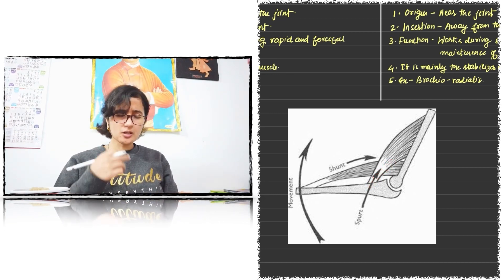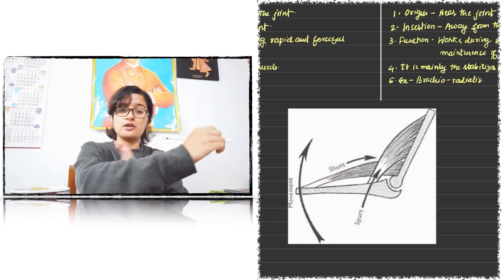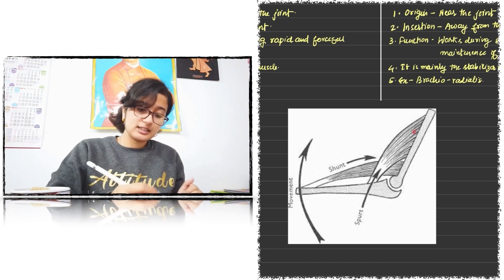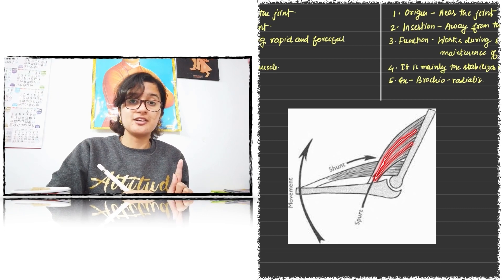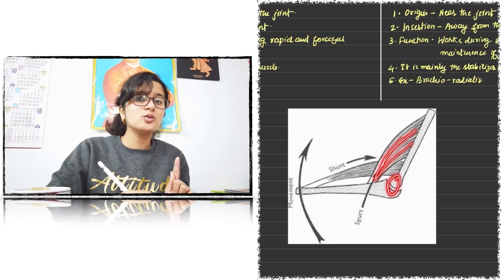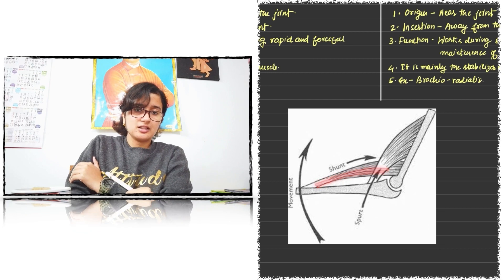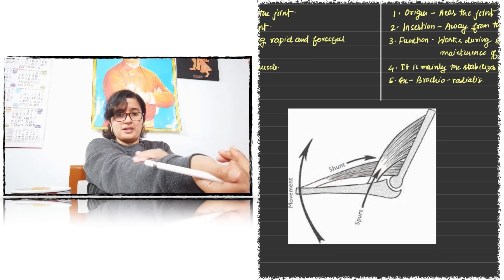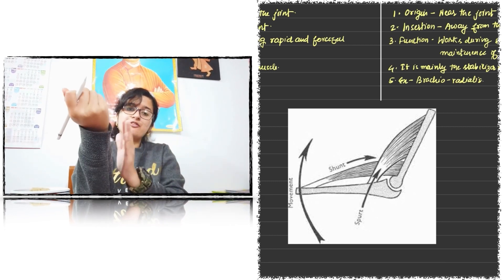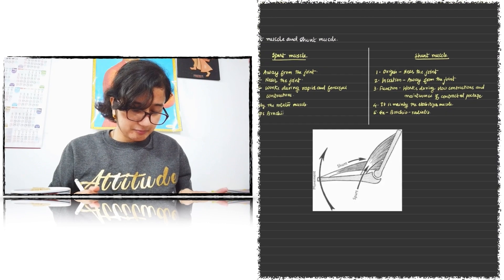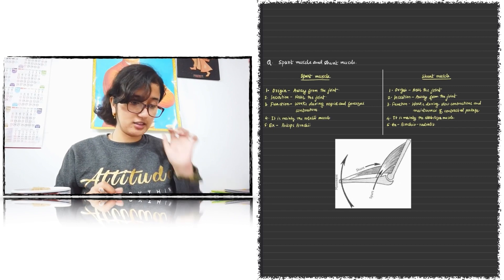This experiment of spurt and shunt muscles was done on the elbow joint. The spurt muscle correlates with our biceps brachii plus brachialis — origin at a distant place, insertion near the joint. The shunt muscle is brachioradialis — point of origin near the joint and point of insertion away from the joint. You can get this PDF in our Telegram channel.